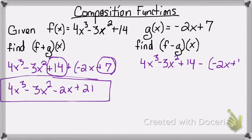So the first thing I will do is distribute that subtraction sign, which is technically a negative 1. Negative 1 times negative 2x gives me a positive 2x. Negative 1 times 7 gives me a negative 7. I'll bring down my first polynomial, and then I'm going to combine like terms.